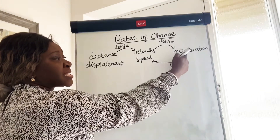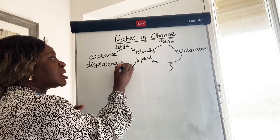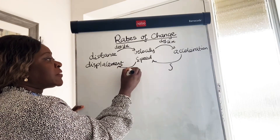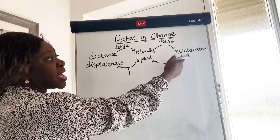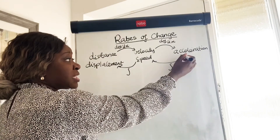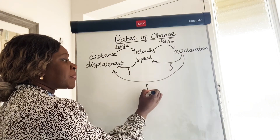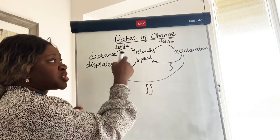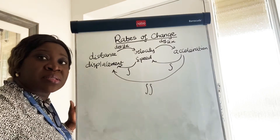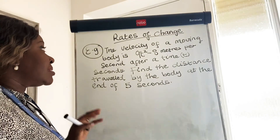If you're given the acceleration and asked to find the velocity, you want to integrate. If you're given the velocity or speed and asked to find the distance, you have to integrate. If you're given the acceleration and asked to find the displacement straight away, you have to integrate twice. I'm going to give you some time to make this little chart in your book, and then we can look at some examples. I hope you copied that down and have it somewhere for reference.